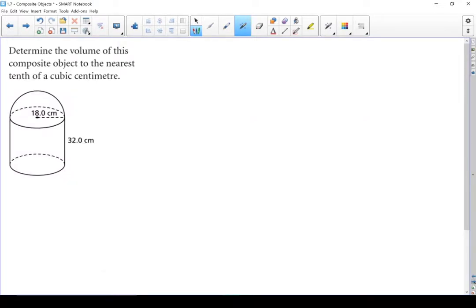Here's the first one. Find the volume of this composite object to the nearest tenth of a cubic centimeter. So I'm looking for volume and I've got two parts. I've got a cylinder on the bottom and I've got a hemisphere on top.